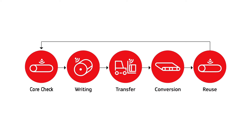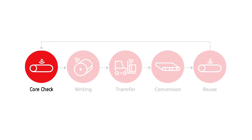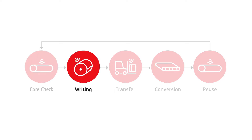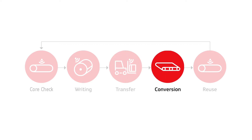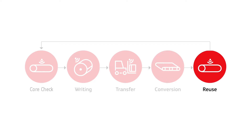It covers five process steps. 1. Core checking makes sure that the RFID tags inside the paper cores are functional. 2. Writing: the paper roll is given a unique identification number. 3. Transfer to the warehouses is done by RFID forklift; RFID floor tags are used to identify warehouse locations. 4. Conversion: RFID readers monitor reel IDs used for individual product batches and automate consumption bookkeeping. 5. Finally, the cores are removed from production, cleaned, and stored for future reuse.